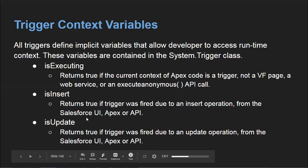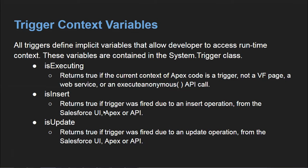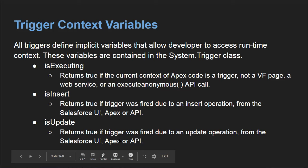The trigger fires from Salesforce UI, Apex, or API. You can check Trigger.isInsert — if a record is inserted, it will be true and you can perform whatever operation you want. 'isUpdate' returns true if the trigger was fired due to an update operation from the Salesforce UI, Apex, or API.